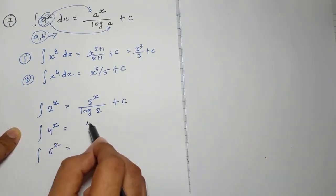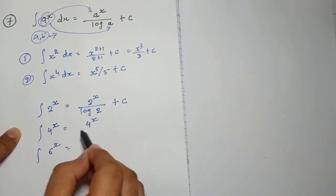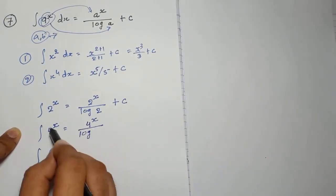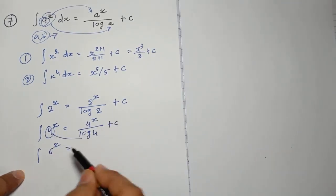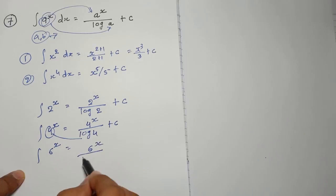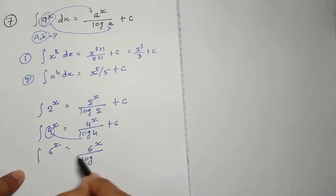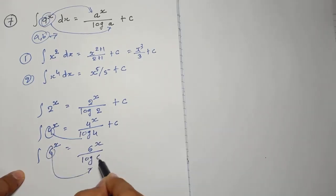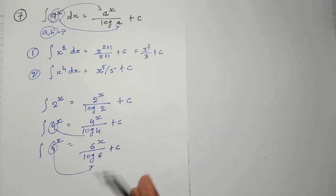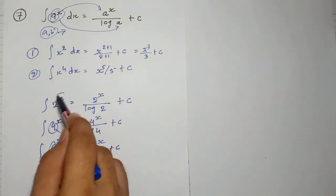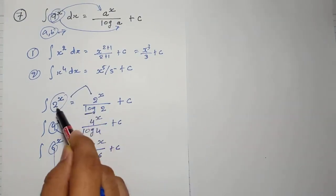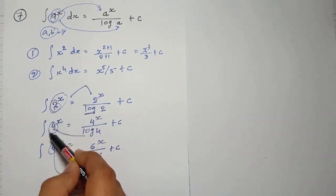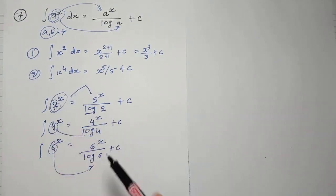What will be the answer of 4 raised to x? First, 4 raised to x as it is, divide by log 4. And 6 raised to x? So 6 raised to x as it is, divide by log 6, plus c. So, very simple: whatever is given, write it as it is, and divide by log of that base — 2, 4, 6 — as it is.